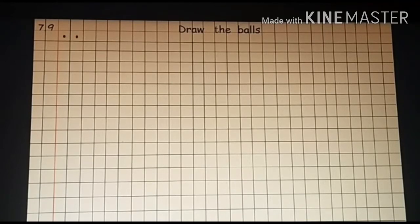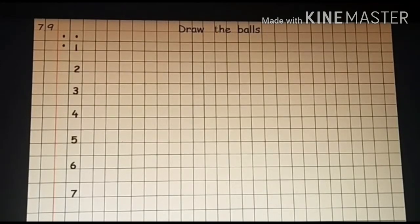Write the numbers 1, 2, 3, 4, 5, 6, and 7 downwards. Now let's draw balls. For one, make a circle.